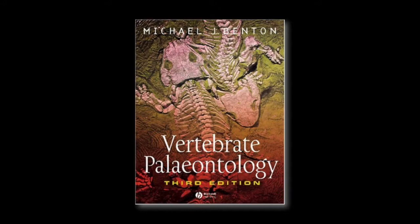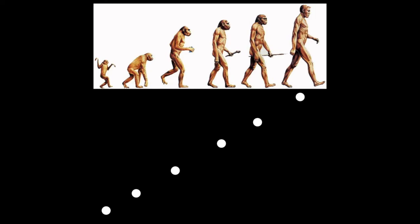Cladistics is the study of relationships between groups of animals. It focuses on showing these relationships rather than drawing an evolutionary chain. You've probably seen The Road to Homo Sapiens, originally by F. Clark Howell, although probably in a more comical context.